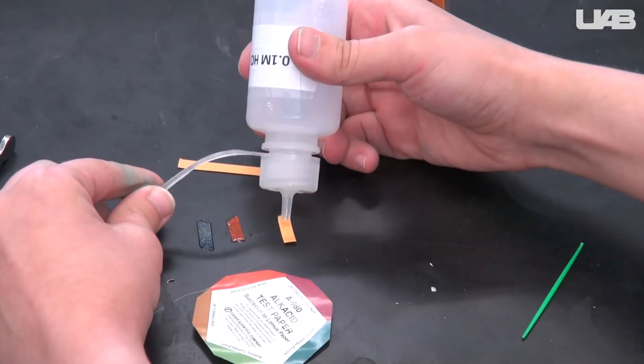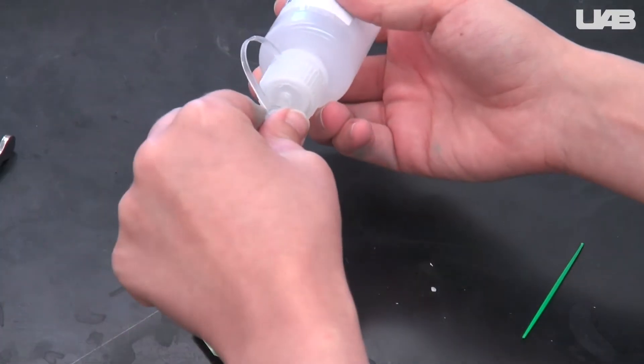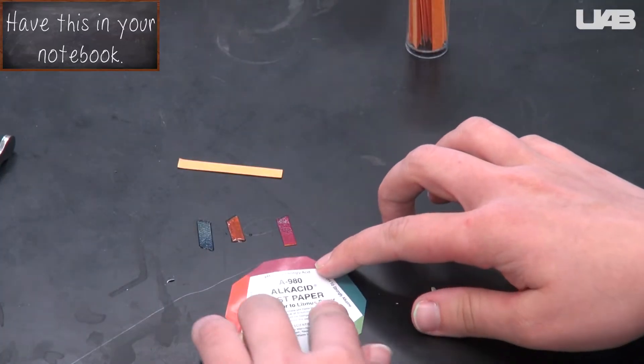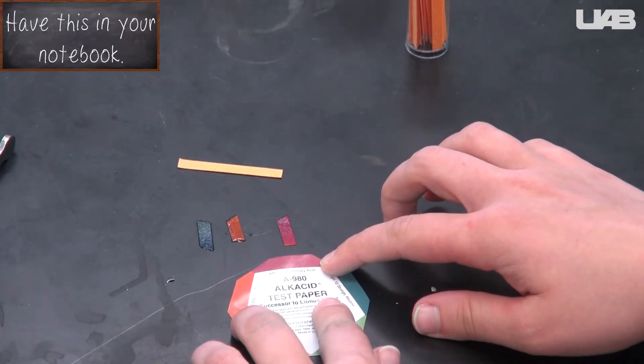To test the pH, you can rip up some pH paper, then place a drop of each of the solutions on it. Compare the color of the paper to the color of the key to estimate the pH.